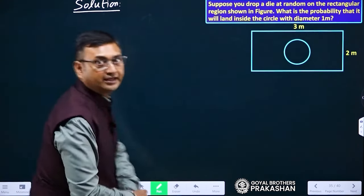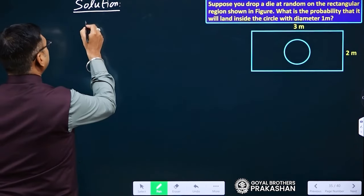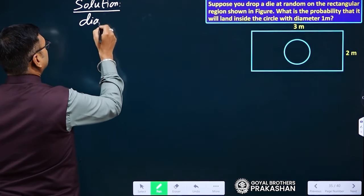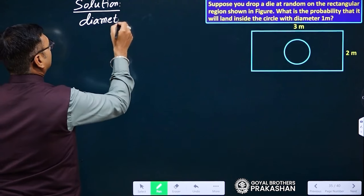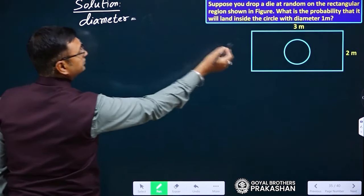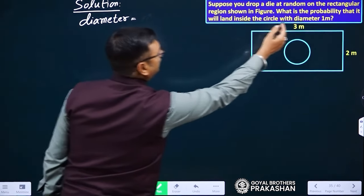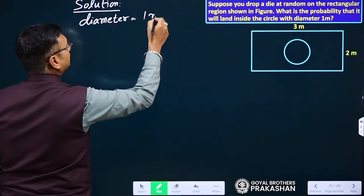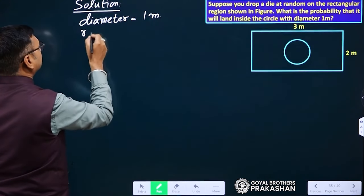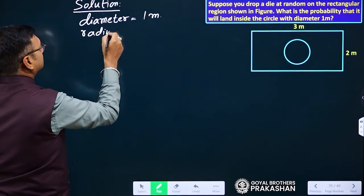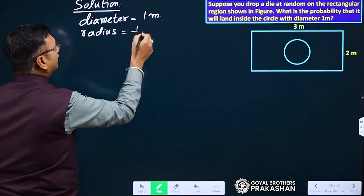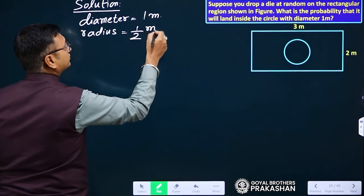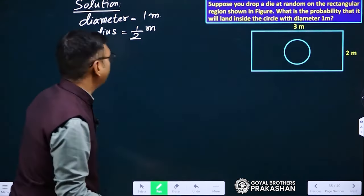Before finding the area of circle, diameter is given. The diameter is 1 meter, so radius will be 1 upon 2 meters because radius is just half of diameter.